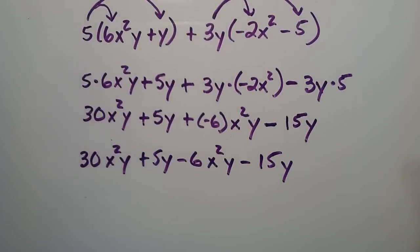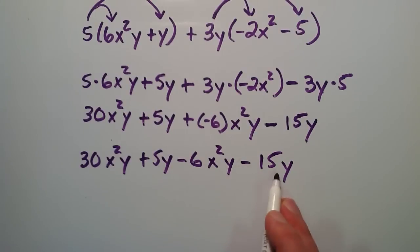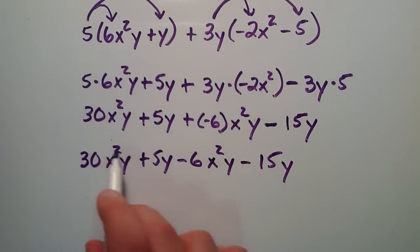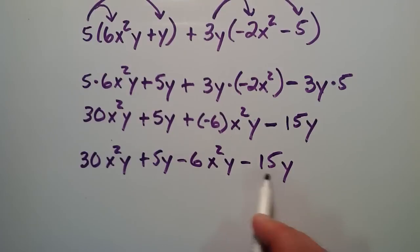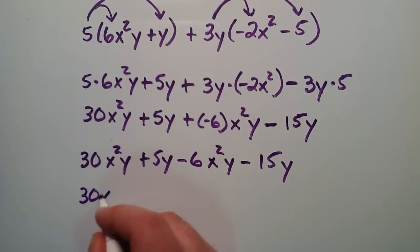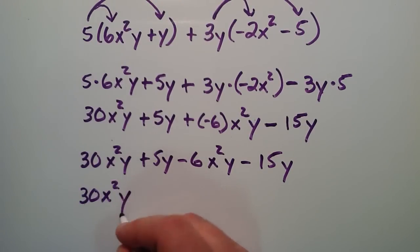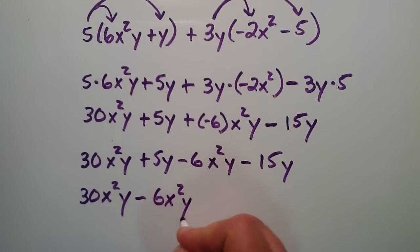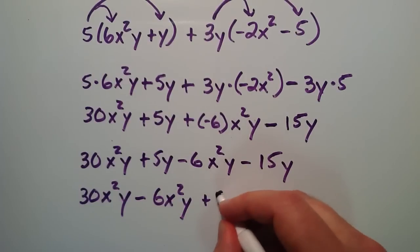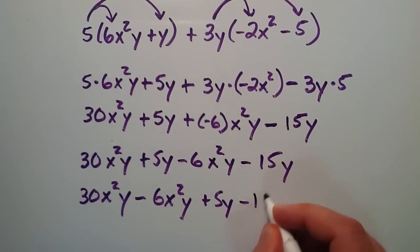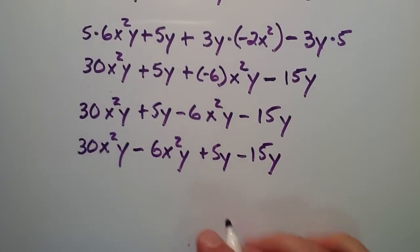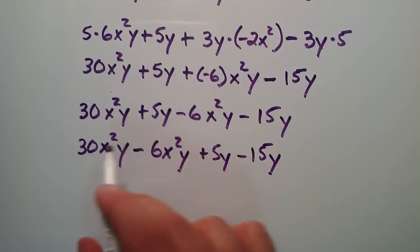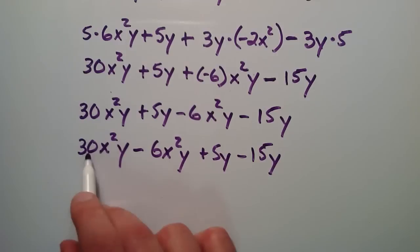So now we have four different terms. These two are like terms, and these two are like terms. The reason why is because this term has x squared y, and so does this one. And these two are like terms because they both have the y. So let's go ahead and write the like terms side by side so it's easier to see. So we have 30x squared y, and then we're going to move this term minus 6x squared y. And now we have the plus 5y, written next to the minus 15y. So we have an x squared y and an x squared y, so we can simply add — or in this case subtract — the coefficients.